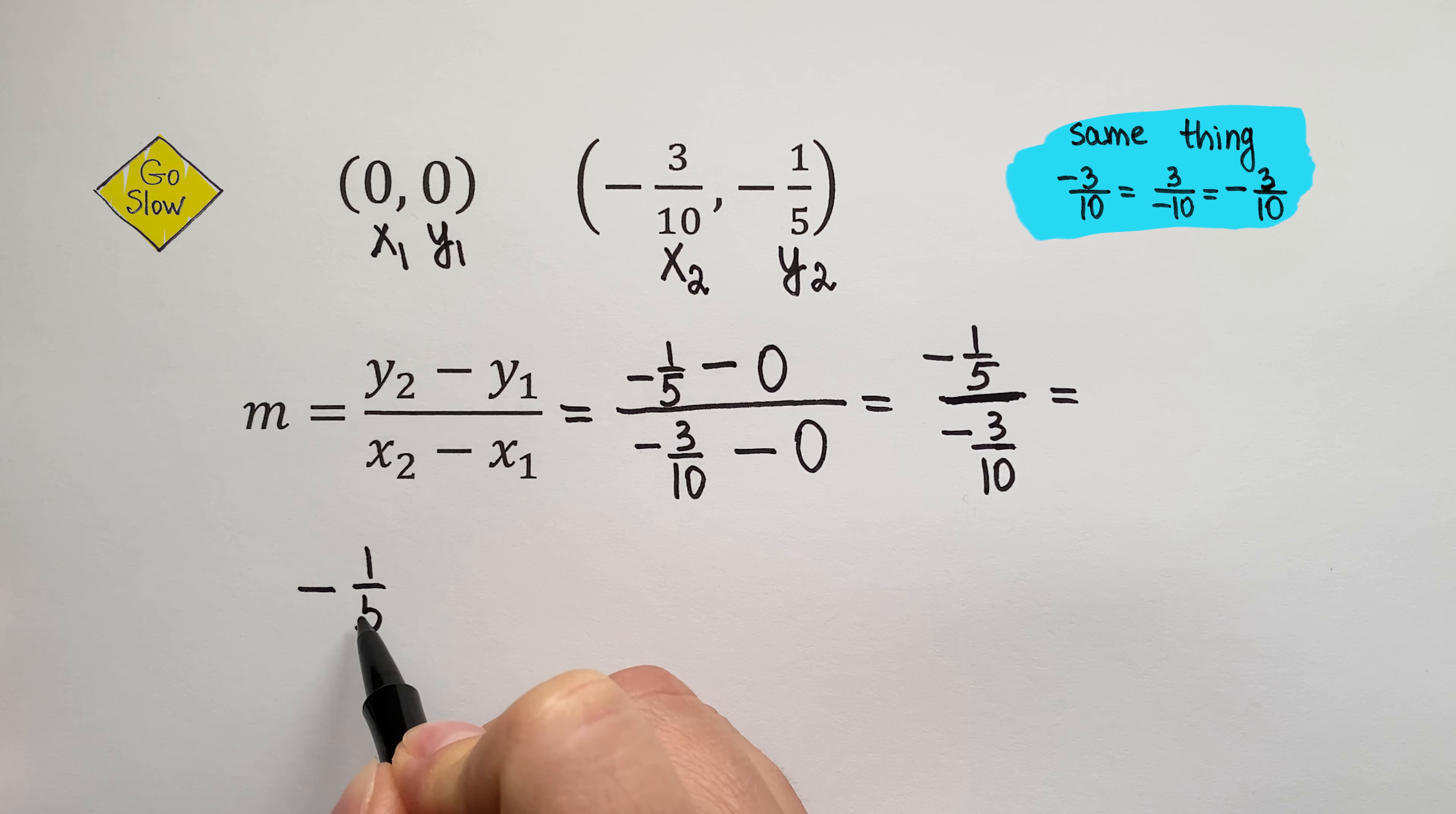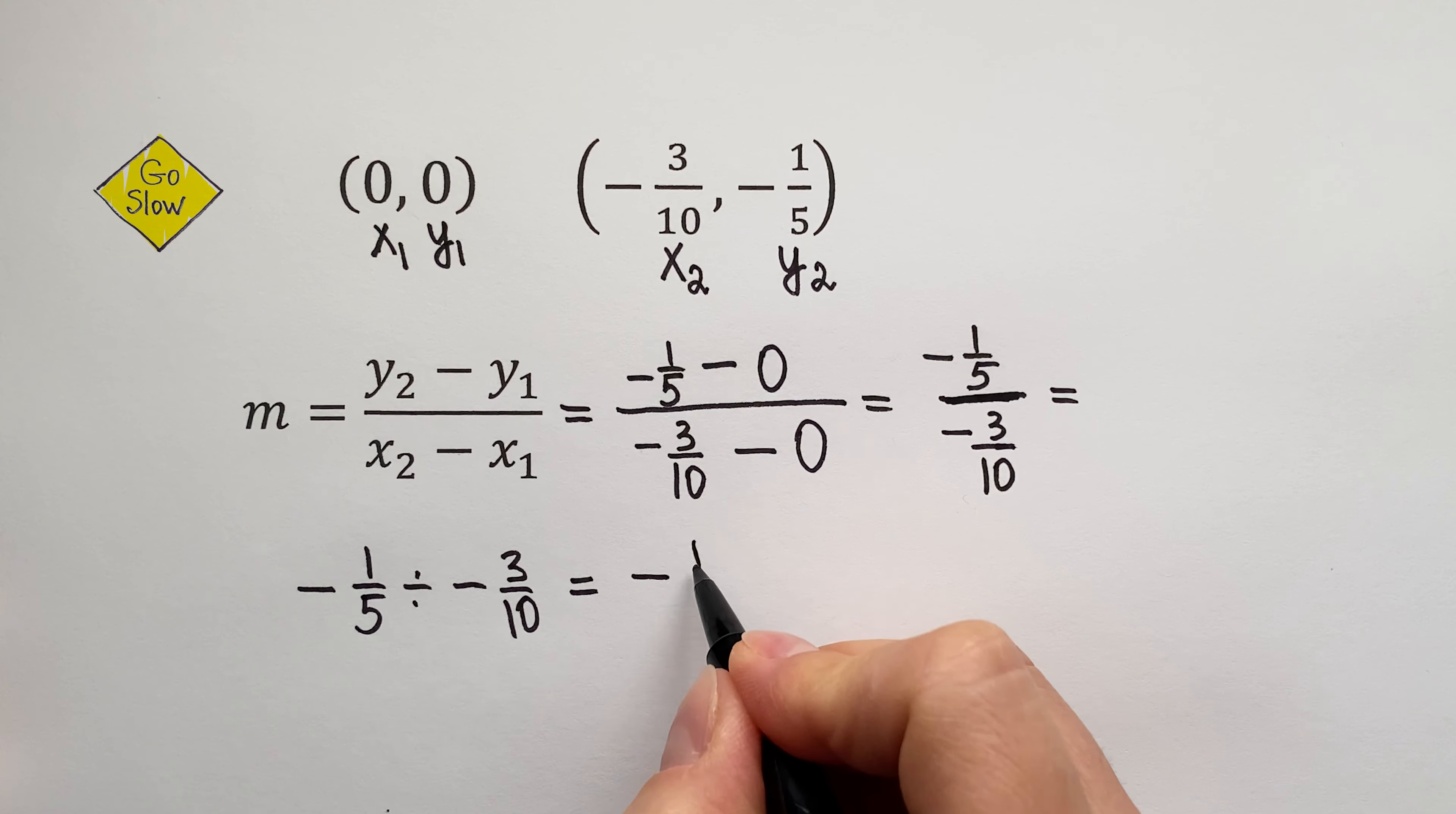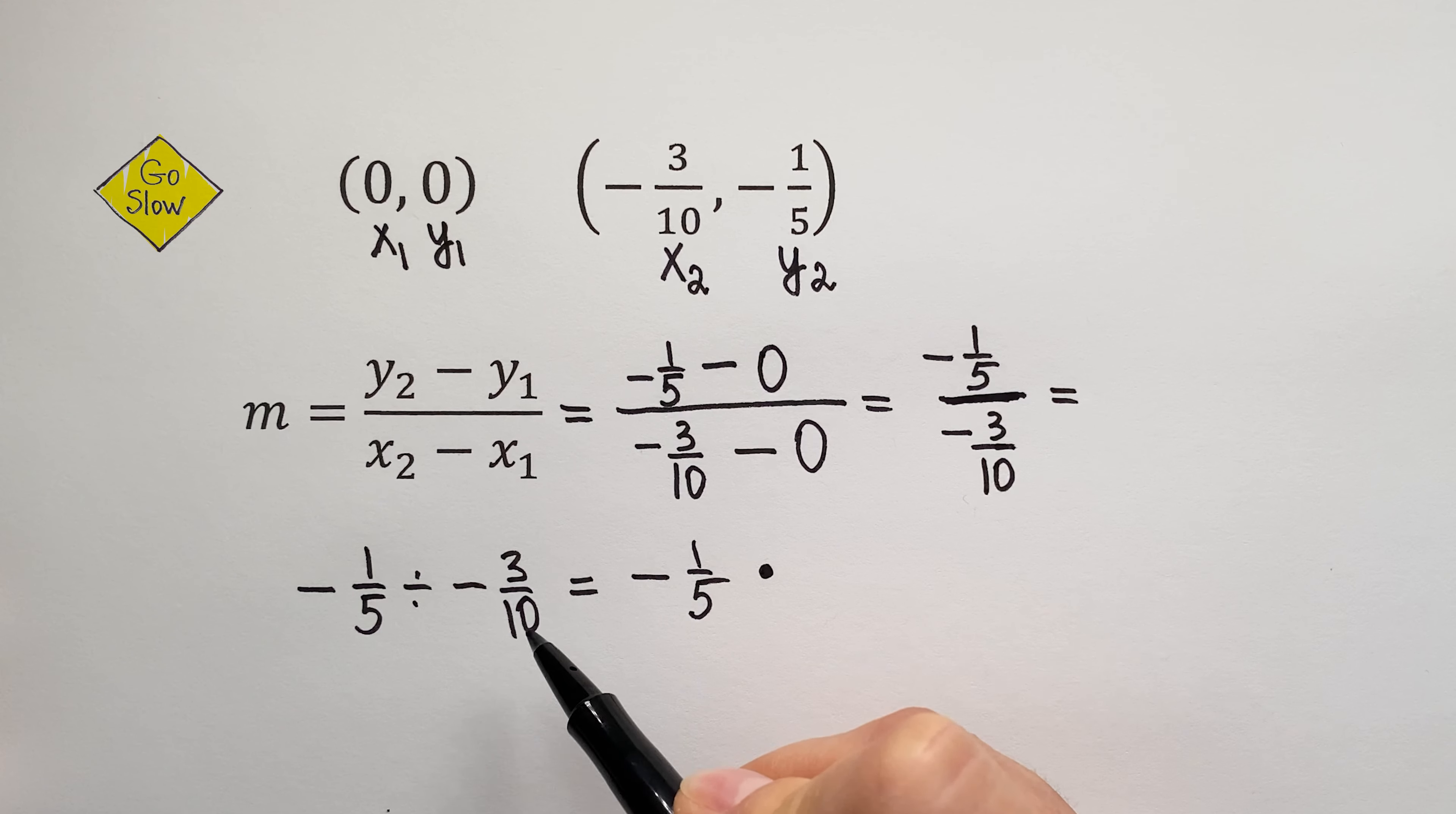When you divide fractions, change division into multiplication. Negative 1 fifth times, and then flip over the second fraction.